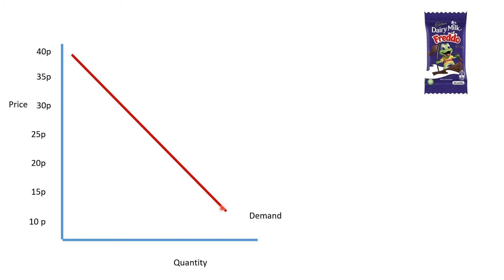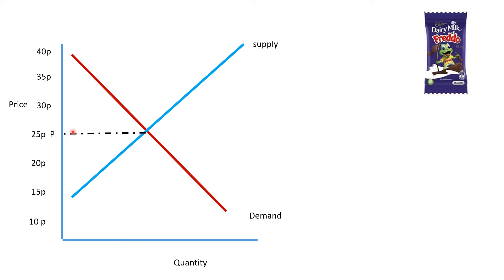We looked at the supply from a business's point of view: if the price was low, not many people would make Freddos. But as the price creeps up and Freddos become more popular, more and more will be produced. What we're looking at is where these two lines cross — this is called the equilibrium. This sets the price at 25p and the quantity Q that is produced, so we all pay 25p for our Freddos.